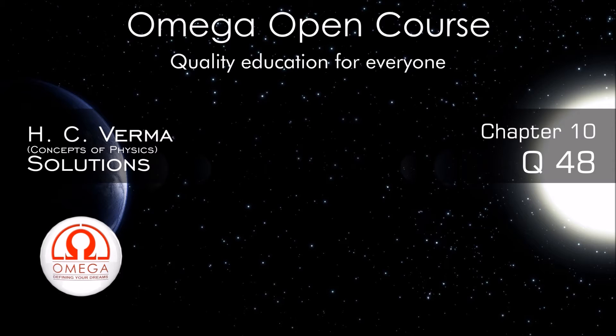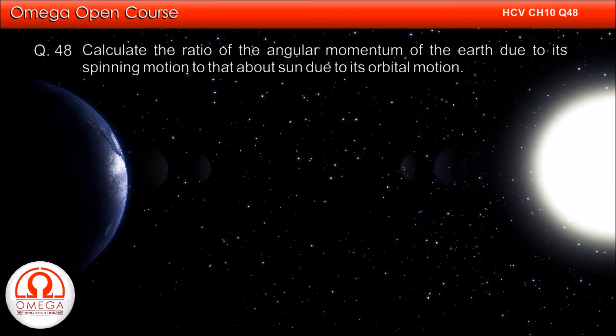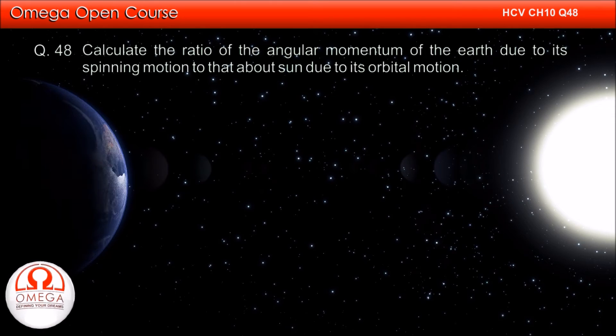H.C. Verma Chapter 10 Question Number 48: Calculate the ratio of the angular momentum of the Earth about its axis due to its spinning motion to that about the Sun due to its orbital motion.